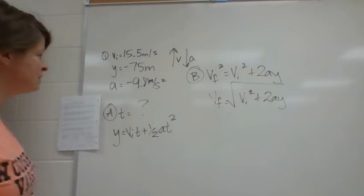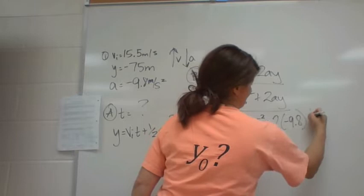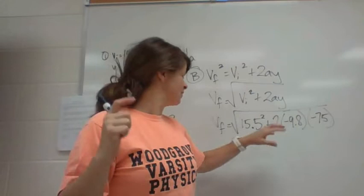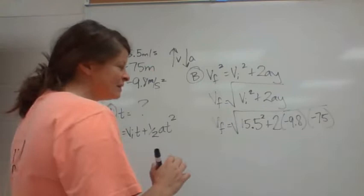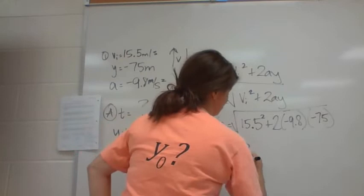Very important to remember your negatives because a negative times a negative is going to become a positive. So this is going to be all additive in here, and you get a pretty big number that you're taking the square root of. I didn't write it on my paper. I did do the math ahead of time this week, so I know I have it right. And I got 39.88.